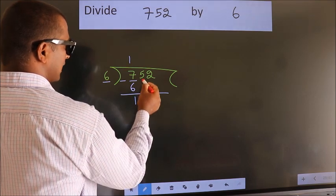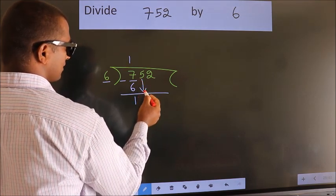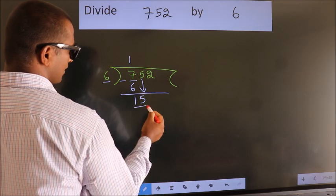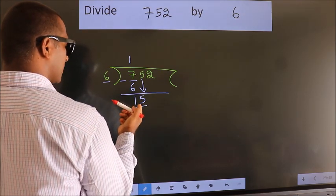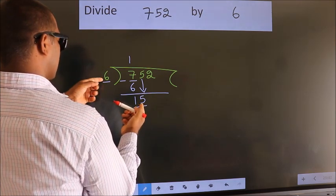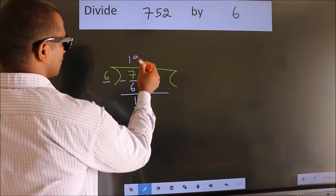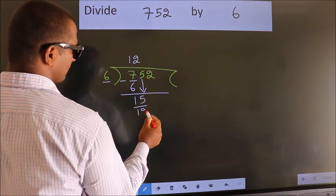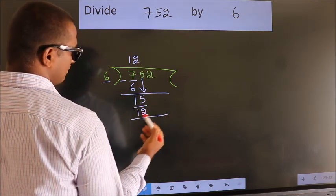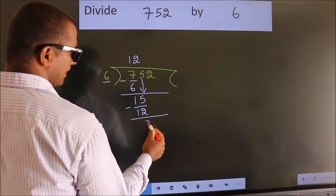After this, bring down the beside number. So 5 down. So 15. A number close to 15 in 6 table is 6 twos, 12. Now we subtract. We get 3.